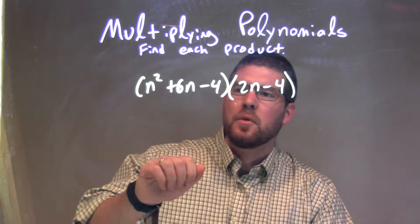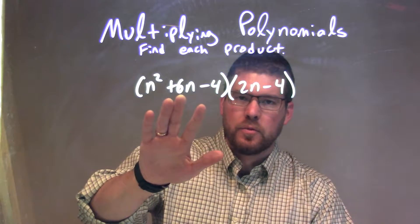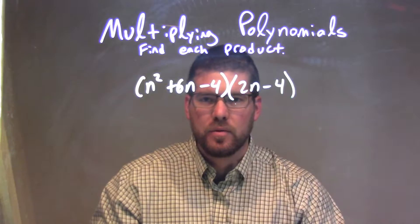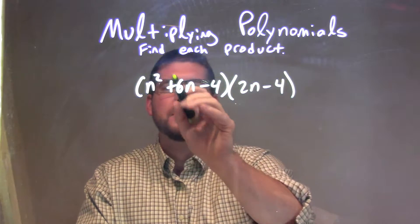What I want to do is multiply all parts of this parenthesis, the first one, times all parts of the second parenthesis. So we'll show our arcs for every single connection here.